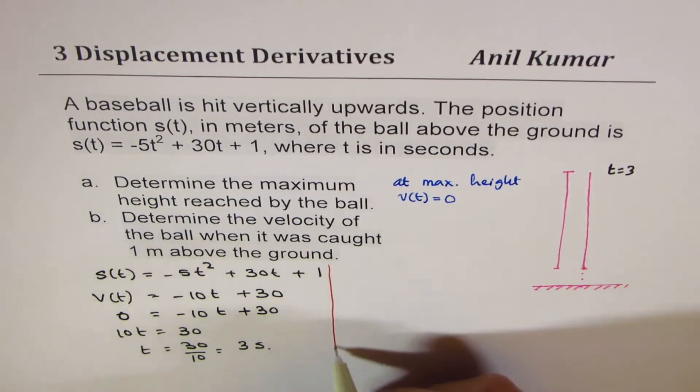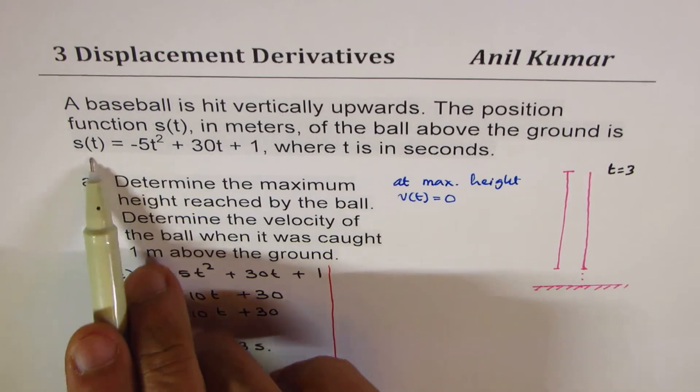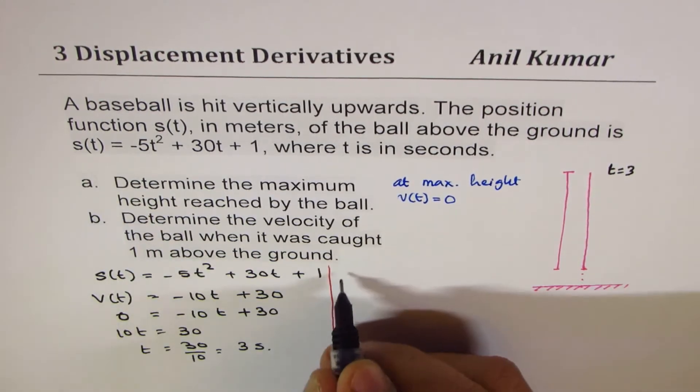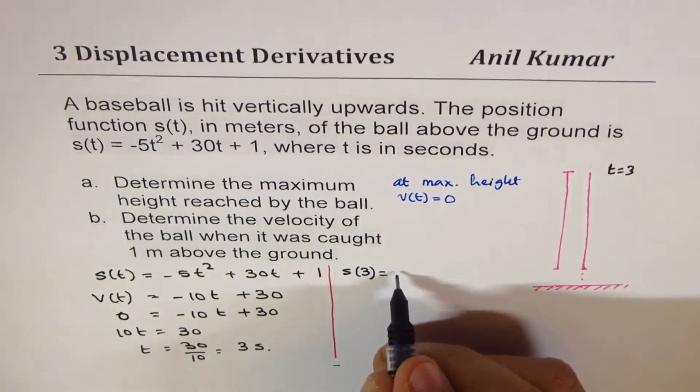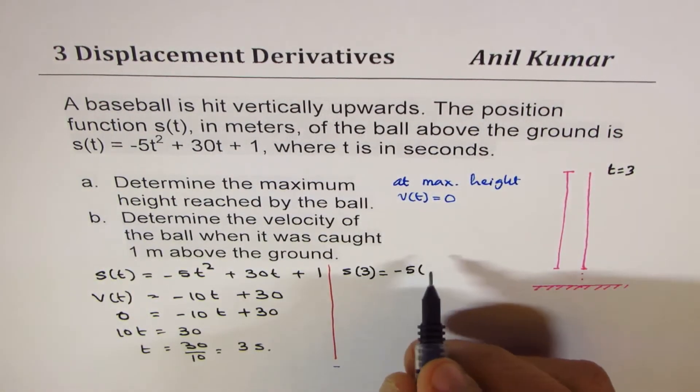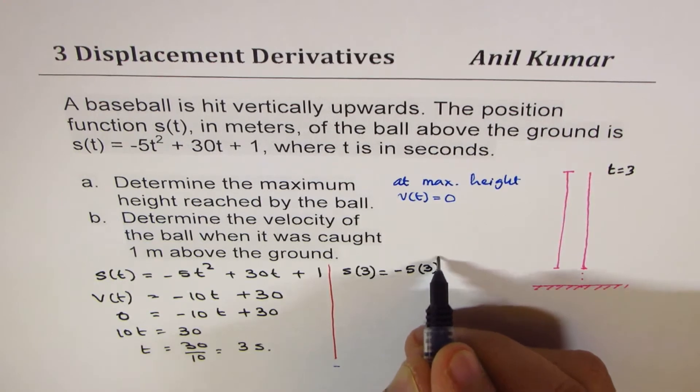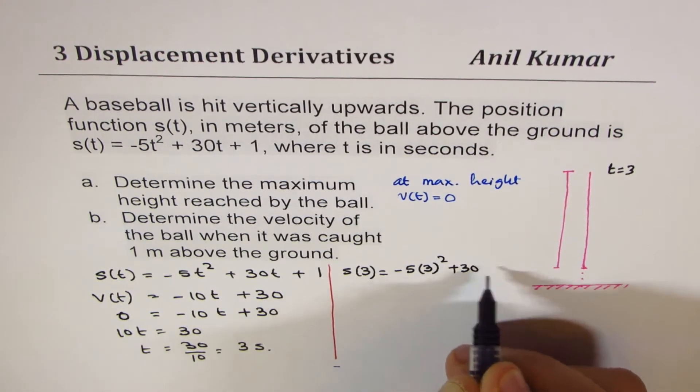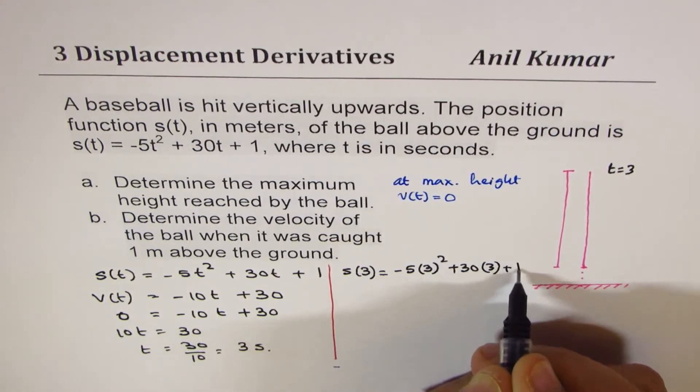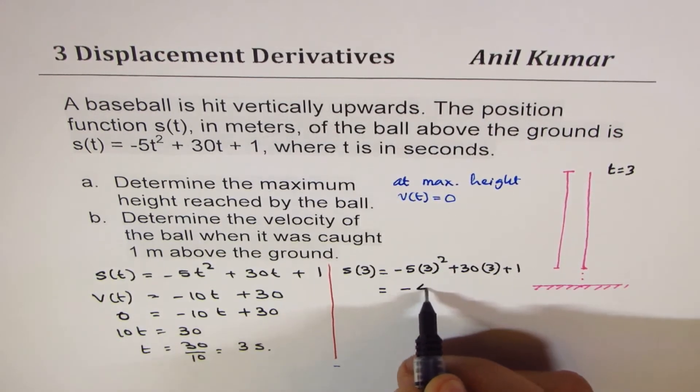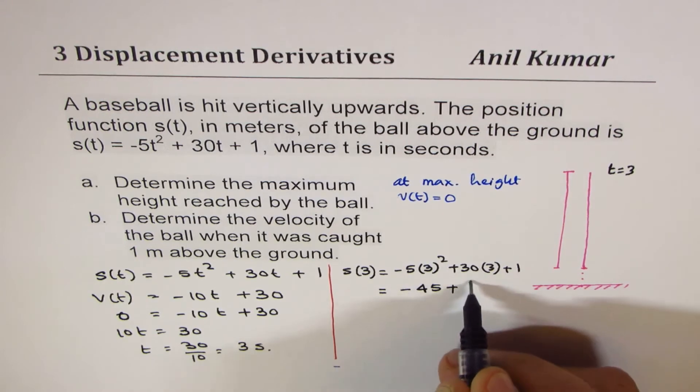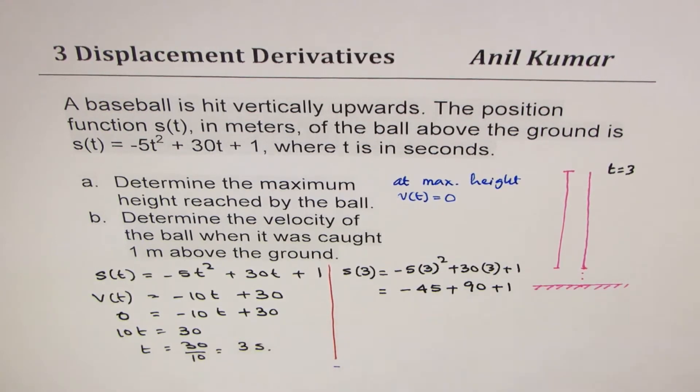So at time t = 3, we can find what position is. We substitute 3 for t in the expression -5t² + 30(3) + 1. Let's calculate this. 9 times 5 is 45 plus 3 times 30 is 90 plus 1.